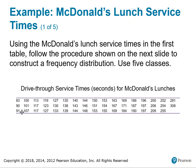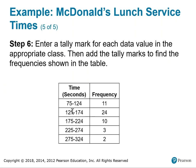Going back to the table of values, we can verify there are indeed 11 recorded times between 75 and 124 seconds — counting all 11 values confirms this. That's where the counts come in. The other frequencies are found in a similar manner for each of the remaining classes in this example.